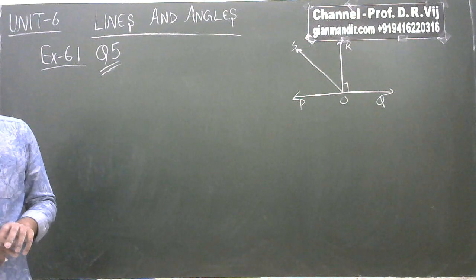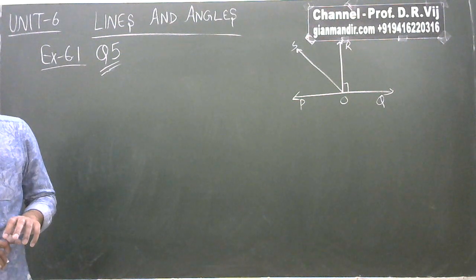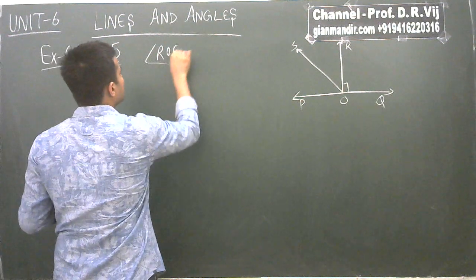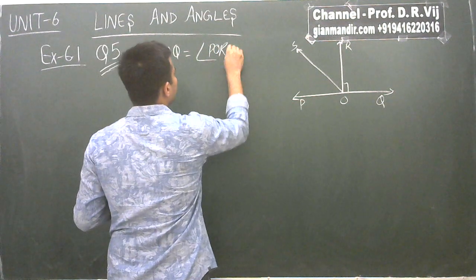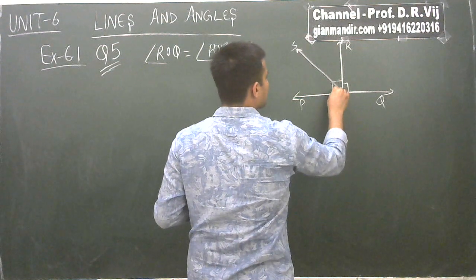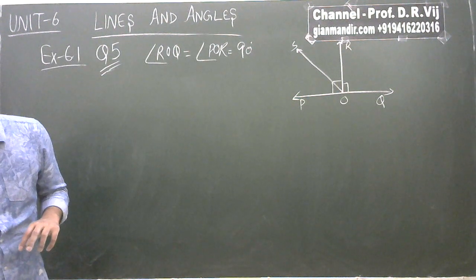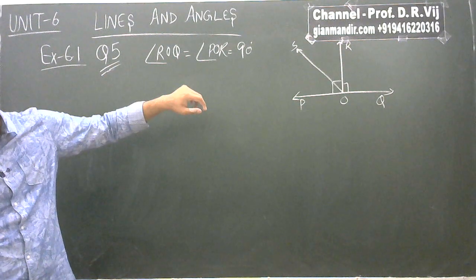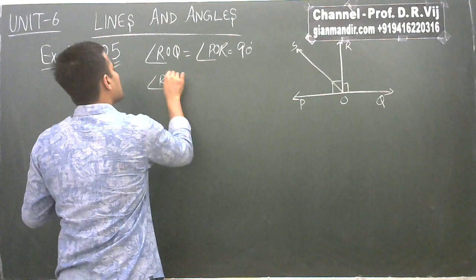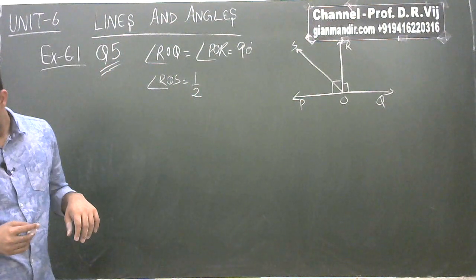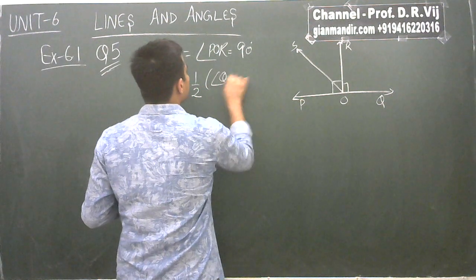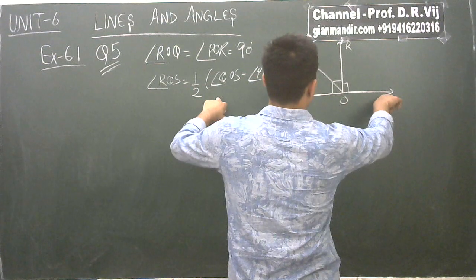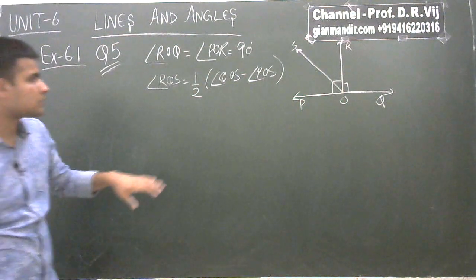Since OR is perpendicular to PQ, angle ROQ equals angle POR equals 90 degrees. OS is another ray lying between rays OP and OR. We have to prove that angle ROS equals half of (angle QOS minus angle POS).